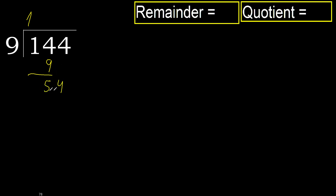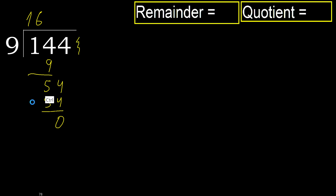Next. 54. 9 multiplied by 6 is 54. It is not greater. 54 minus 54 is 0. Next. There is no next number, therefore finish it.